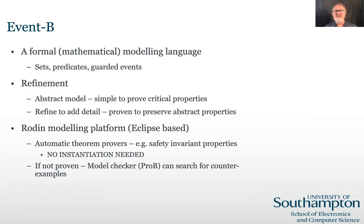Event B is a formal modelling language that supports this approach. It's based on set theory with predicate logic and guarded events that change the state of the variables. Critical properties are expressed as invariants that each event must preserve. The Rodin modelling platform contains automatic theorem provers that attempt to prove this preservation and that the model is well defined. If the provers do not succeed, the PRO-B model checker can be used to search for a counter example. This interactive modelling and verification of critical properties leads to a deeper understanding of the system.